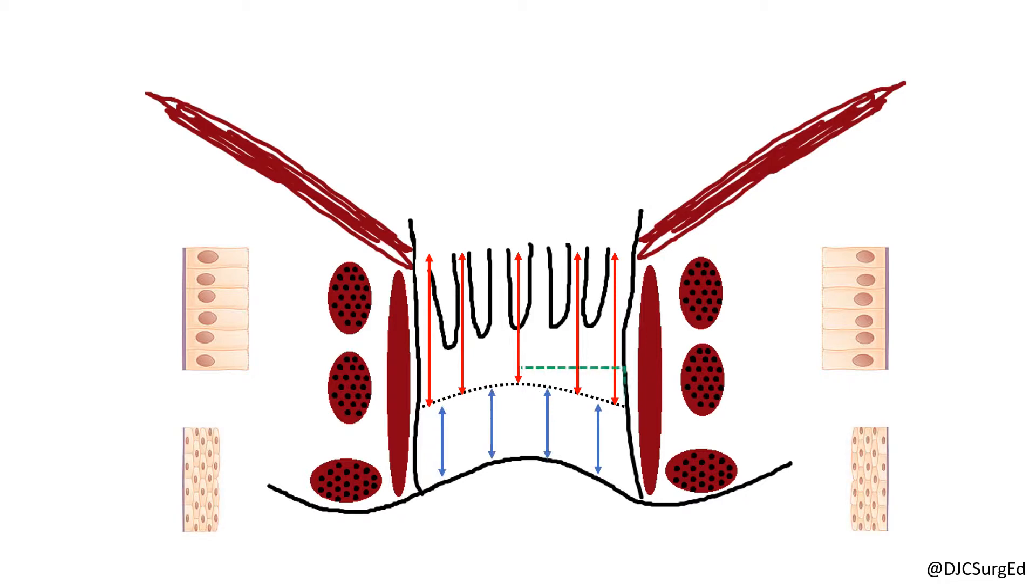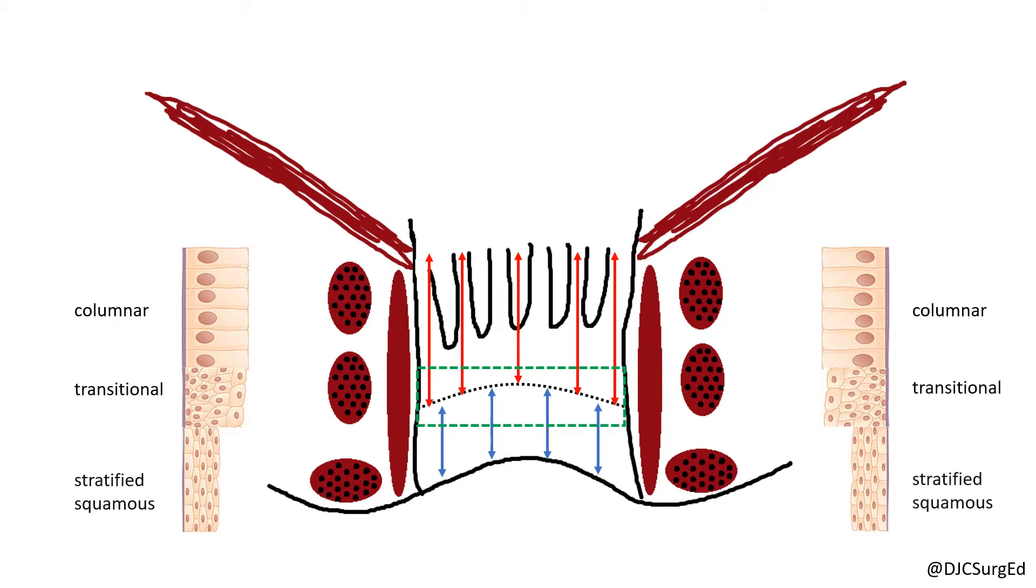The dentate or pectinate line marks this transitional segment, known as the anal transition zone or cloacogenic zone, where mucosa is composed of columnar, transitional, or stratified squamous epithelium.